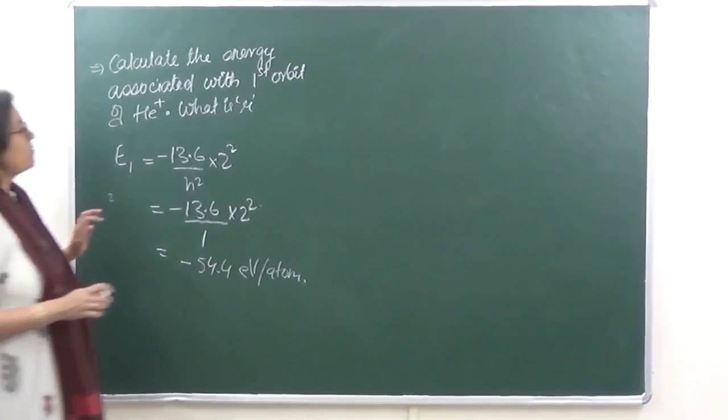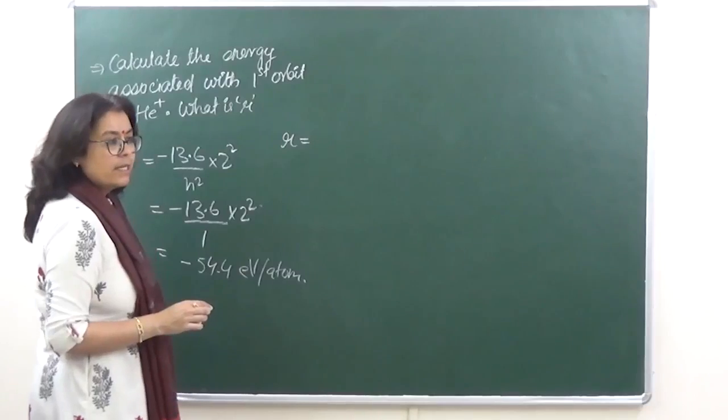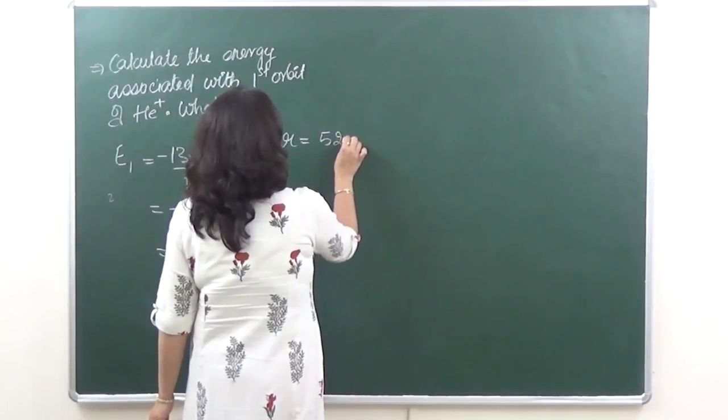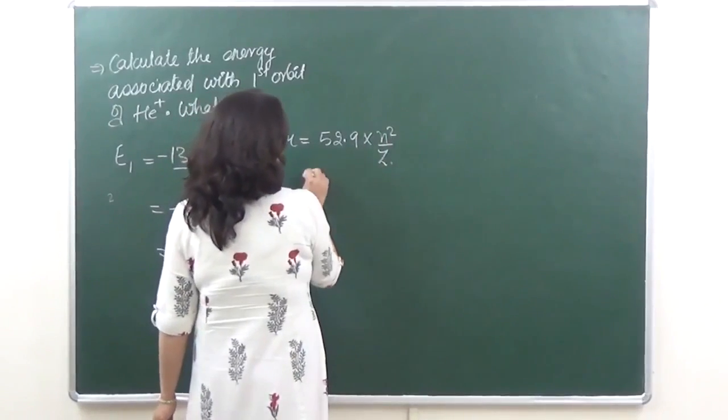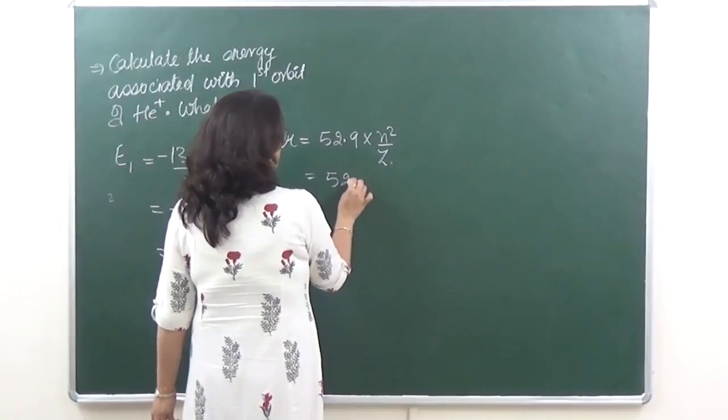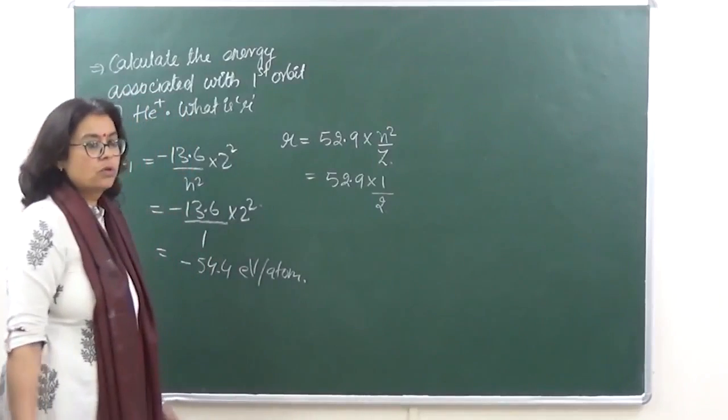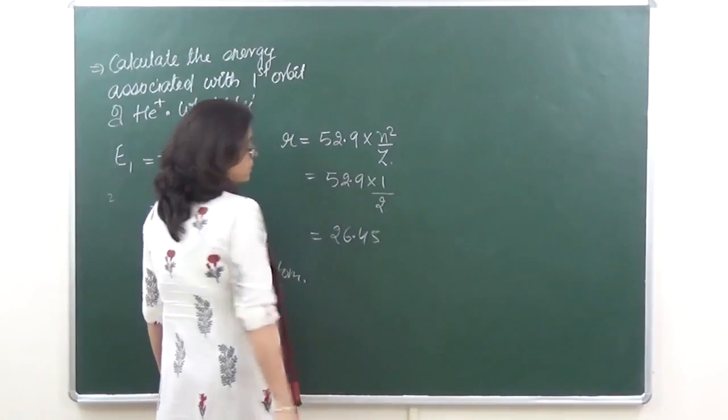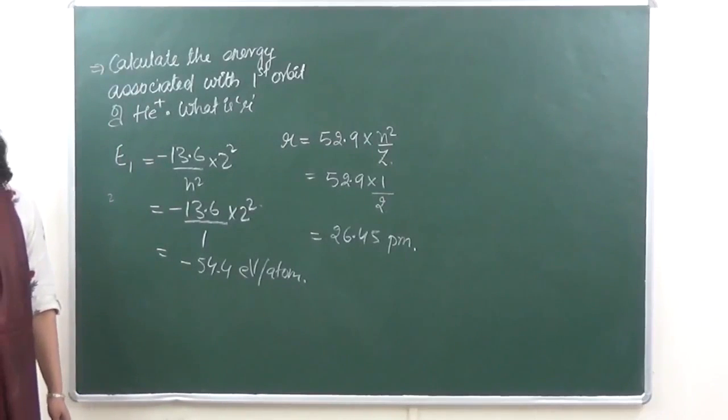Second part is we have to calculate the radius. Let's calculate in picometers: 52.9 into n square upon z. Again n square over here is going to be 1 squared, so 52.9 into 1 divided by the atomic number of helium which is 2. This will come to 26.45 picometers. So these are the simple questions from this section.